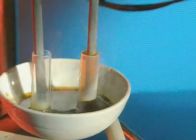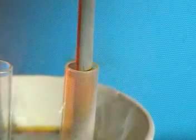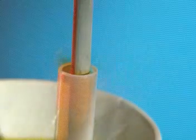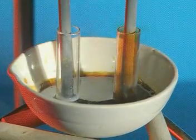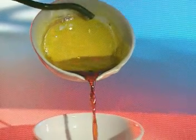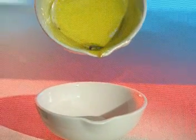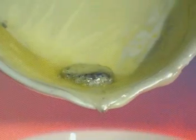What could the brown gas be? The gas is bromine. Although nothing obvious appears to be happening at the left-hand electrode, pouring the molten lead bromide away reveals a small silvery metallic bead. This is pure lead.